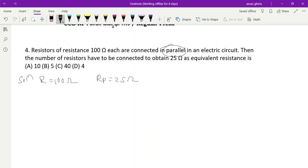They are talking that equivalent resistance should be 25 ohm. How many resistors we have to connect? You know the formula: 1 by Rp is equal to 1 by R1 plus 1 by R2 plus 1 by R3. Because we don't know how many, we write n times 1 by R. 1 by total equivalent resistance 25 equals n times 1 by 100. Just cross multiply: 100 divided by 25 is equal to n. You will get the answer n is equal to 4. So D is the option.